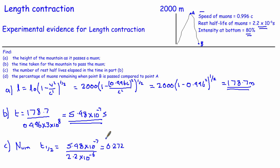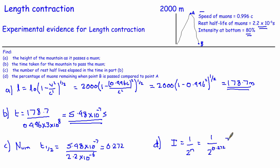That's basically exactly the same number as in the last video. For part D, the fraction at the bottom is 1 over 2 to the power of n, where n is the number of half-lives. So the fraction left at the bottom is 1 over 2 to the power of 0.272. Doing that on your calculator gives 0.83 — alternatively 83% — which is exactly the same number we got when we considered time dilation using exactly this data.